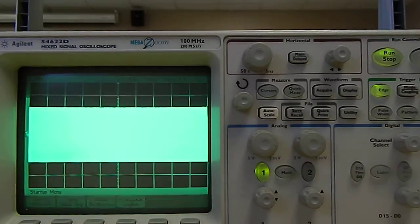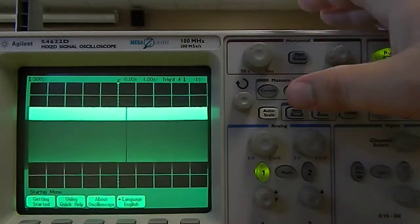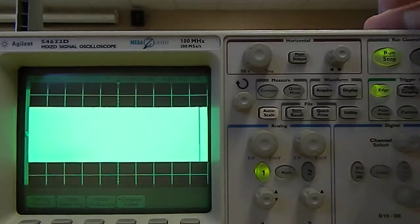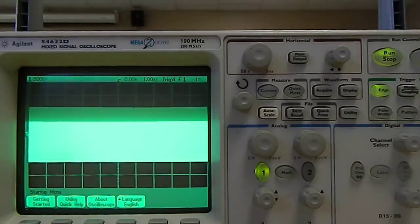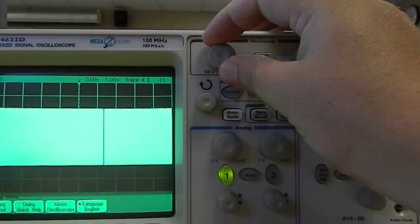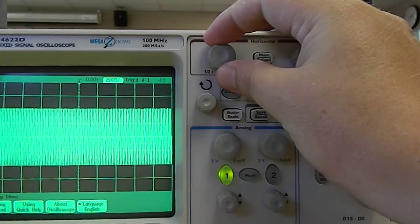But still this just looks like a relatively solid line. So, how do we fix that? Well, we are going to want to change the horizontal scale. And you can see in this upper part, it says horizontal scale.